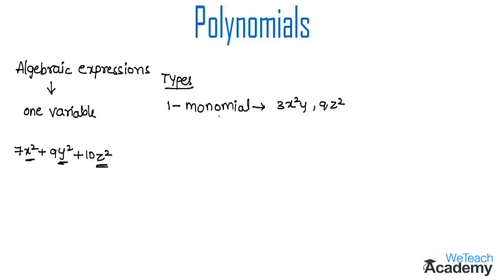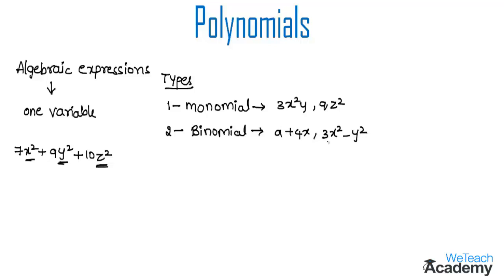The second type is a binomial expression. A binomial expression is an expression containing two algebraic terms. For example, a plus 4x and 3x squared minus y squared. This expression contains two terms, so we call it a binomial expression.